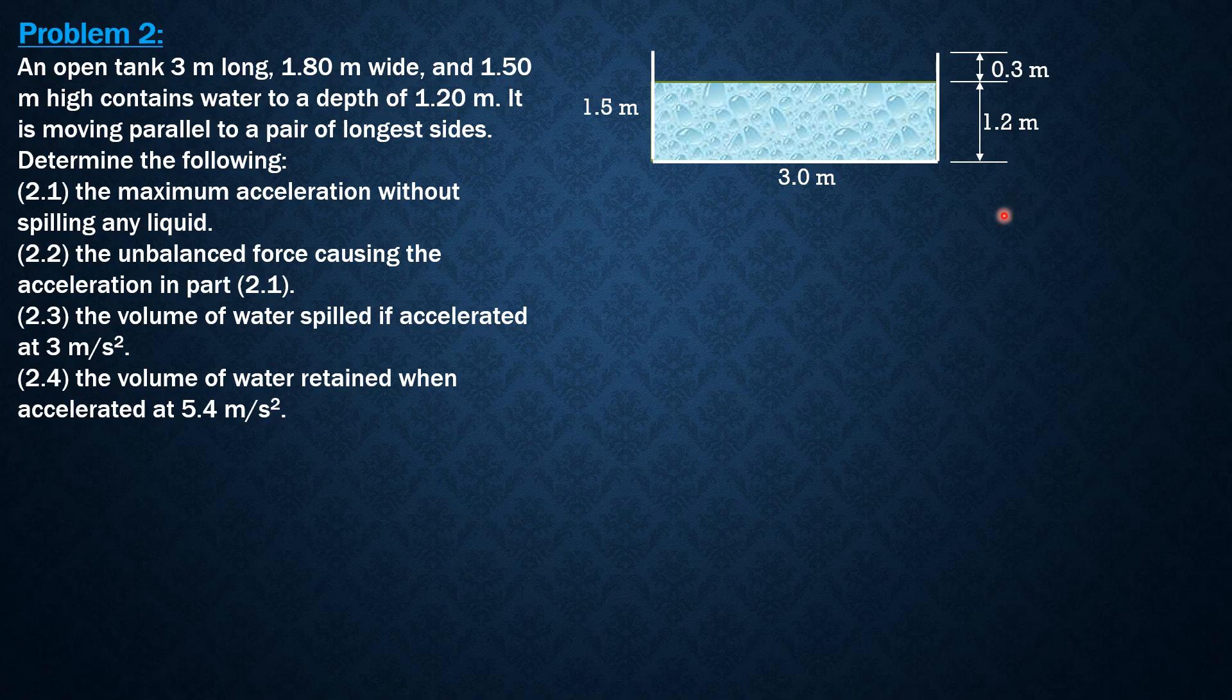For the first question, for maximum acceleration without spilling any liquid, the resulting surface would cross the point of symmetry here. This is 0.3, and this should be half of 3 or 1.5. So the water surface drops to 0.3 meter also, so that this remaining depth here is 0.9, which is 1.2 minus 0.3.